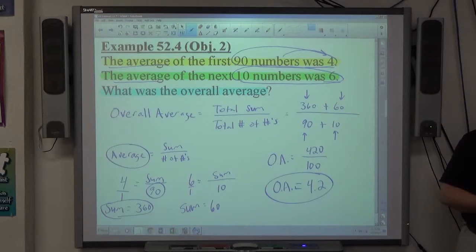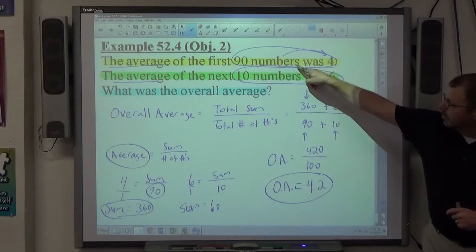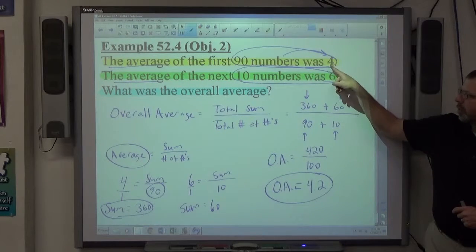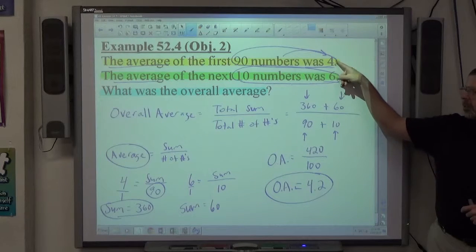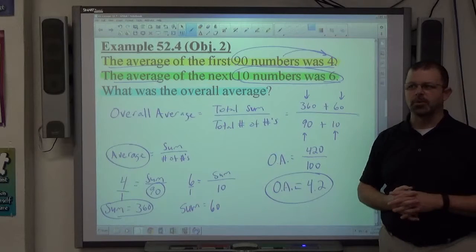But overall average is always between the averages, not halfway between, but between. So again, since this was more numbers, the answer is closer to this. This was fewer numbers, the answer is further away from this. The answer is always going to be between the averages, but it's going to be closer to whichever one has the most numbers going into it.